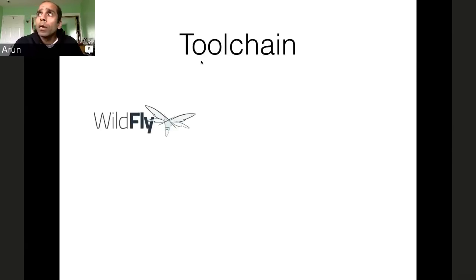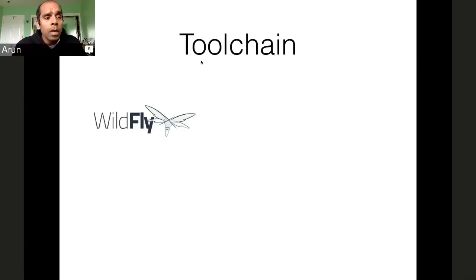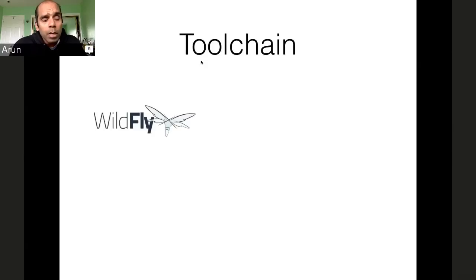Wildfly is the community project from Red Hat where the Java EE 7 implementation is being done. This is only a community project, which means there is no commercial support, no security updates, no patches available. Eventually, Wildfly will be available as JBoss EAP 7, and that's where commercial support can be purchased. JBoss Developer Studio, NetBeans, and IntelliJ — all three IDEs support Wildfly.